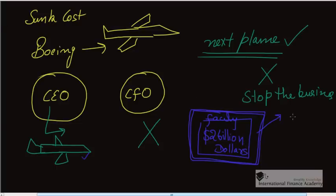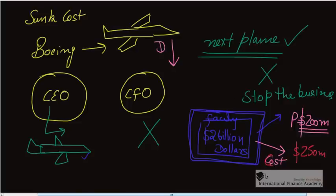CFO says, by the way, you should know that right now the demand for planes is quite low, which means I can sell one plane at $200 million. I can price my plane at $200 million, but the cost of manufacturing this plane is $250 million. So that's my cost.